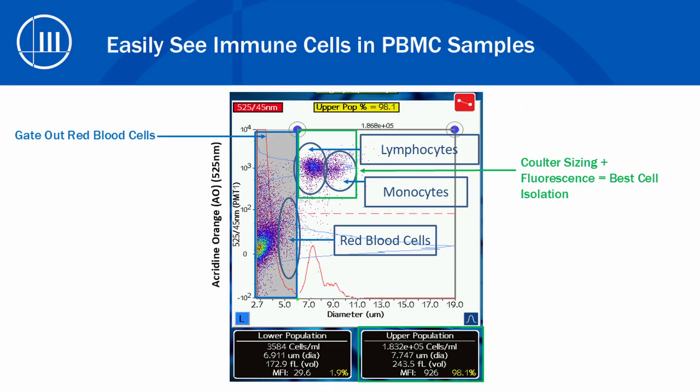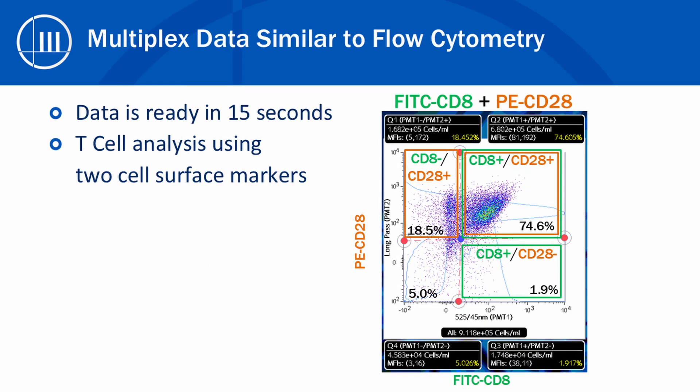That many data points results in incredibly reproducible data, with a coefficient of variation often below 5%. You're also able to very easily differentiate different cell types, as can be seen from this PBMC sample data. A full sample measurement only takes 15 seconds, even for runs with multiplex fluorescent data, like this T cell sample with two CD markers.